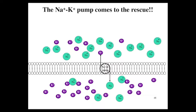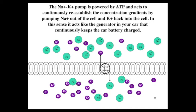The sodium-potassium pump comes to the rescue. The sodium-potassium pump is powered by ATP, and it acts to continuously reestablish the concentration gradients by pumping sodium out of the cell and potassium back into the cell. In this sense, it acts like the generator in your car that continuously keeps the car battery charged.